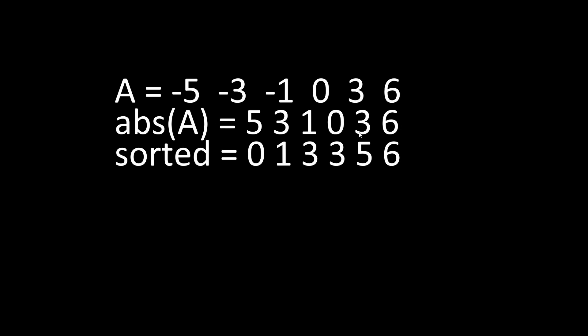Then we can sort the absolute values of A in increasing order again, and then we can check each pair of consecutive elements to see if they are different. If they are, we increment a counter of distinct elements.